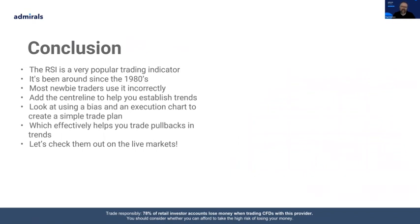Remember that the RSI is a very popular trading indicator — it's been around since the 1980s from J. Wells Wilder. Most newbie traders use it incorrectly, just selling when price gets overbought or buying when price gets oversold — that rarely works long term. But adding a centre line at 50 can help you establish the trend and the bias. You can use a bias and an execution chart to create a simple trading plan that helps you trade pullbacks in trends — the best way for new traders to operate.